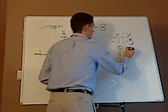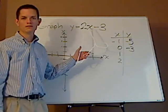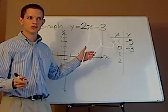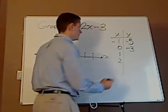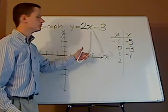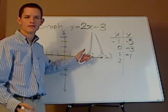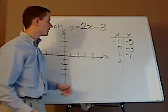Plug in one, two times one is two, two minus three gives you negative one. I plug in a two, two times two is four, minus three is one.